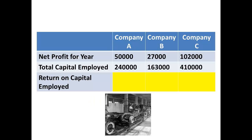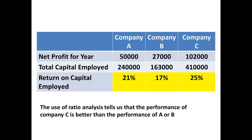The figures for each company have been taken from the financial statements and entered into our chart. When the ratios are calculated, we can see more easily that company C has the best return, and we can order the three companies in terms of best to poorest as C, A, B.